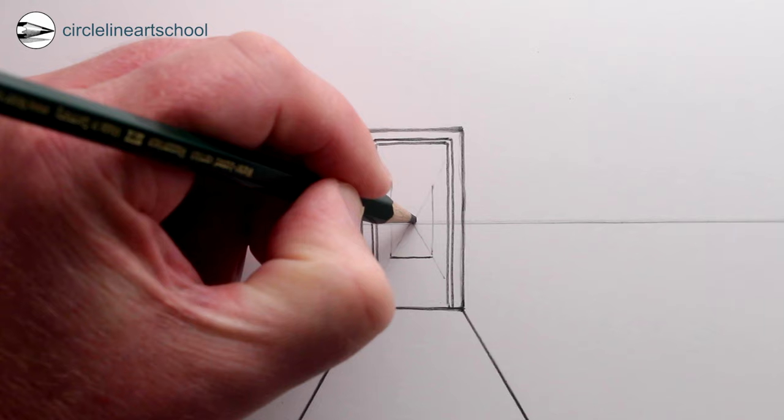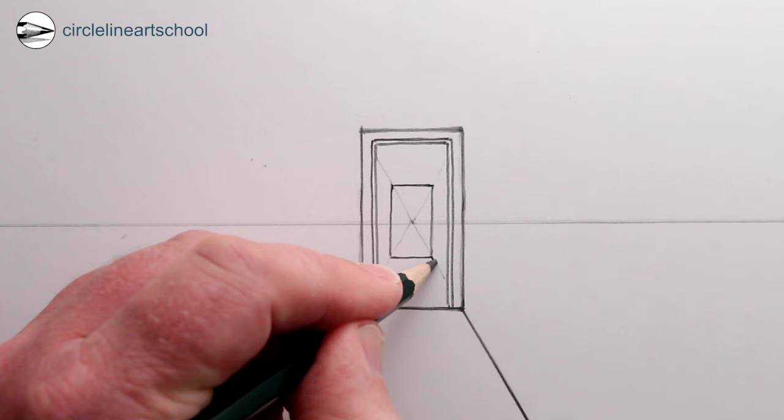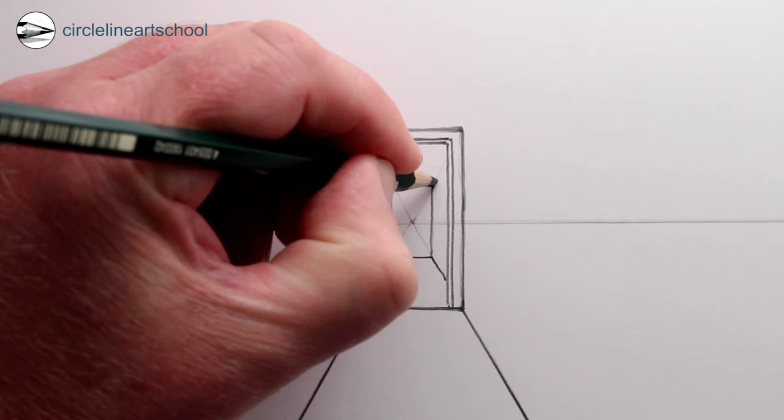And then using the vanishing point and the corners of the first doorframe, we can find out the height of the second doorframe using one-point perspective. So this is one-point perspective because we've got one vanishing point and that's in the center, more or less the center of the drawing.